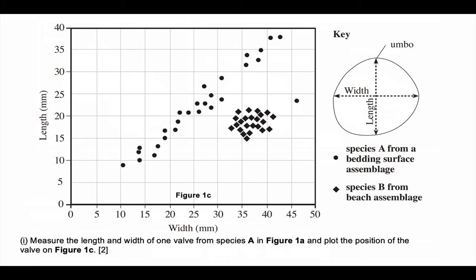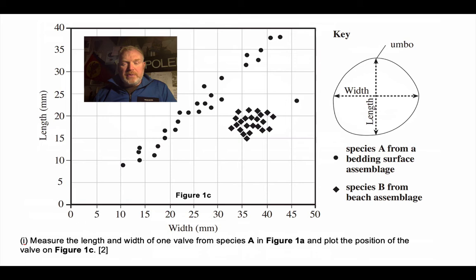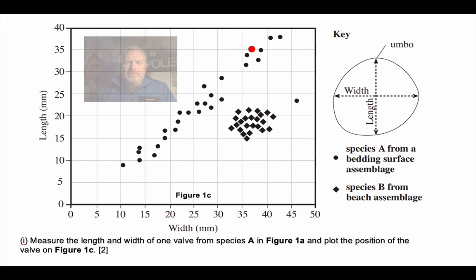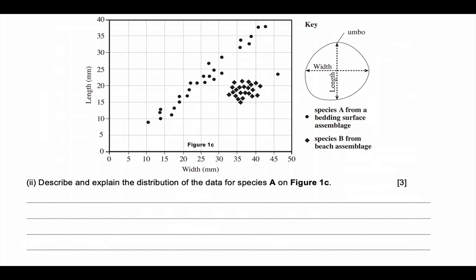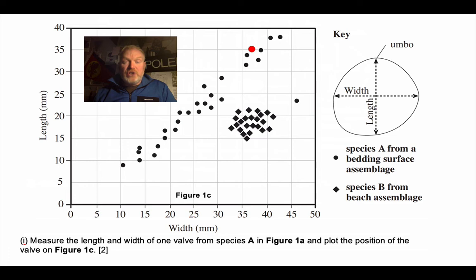We then have some data about the fossil assemblages of these particular species. We have Species A and Species B, and we've got an example of a shell from Species A to measure. I measured it to be about 37 millimeters wide and about 35 millimeters long. You get a mark for each measurement, so if you had one of those right and the other wrong, you will get one mark; two marks for getting both exactly right.